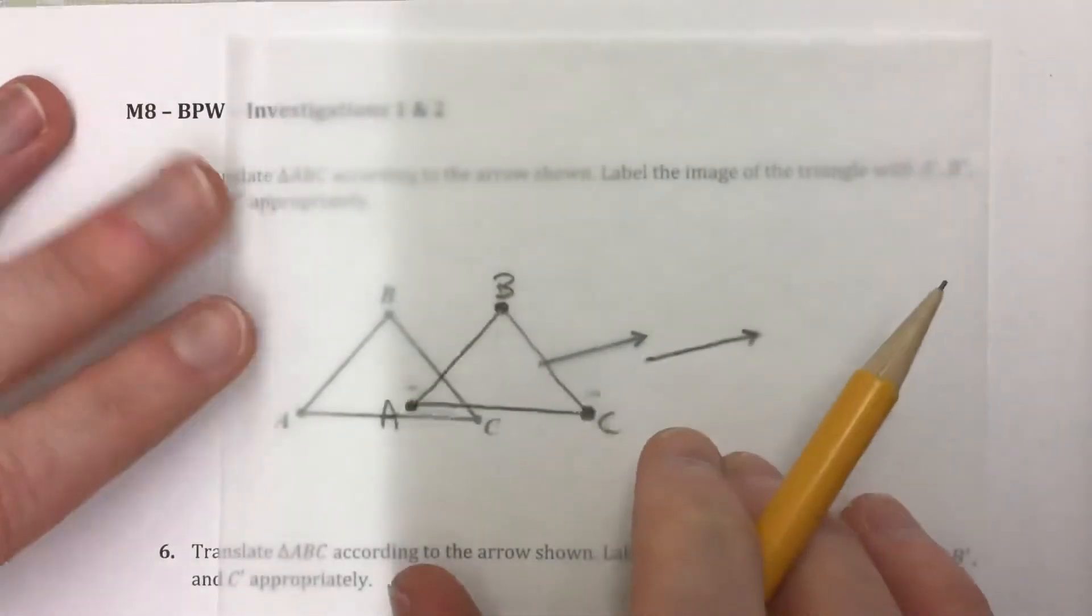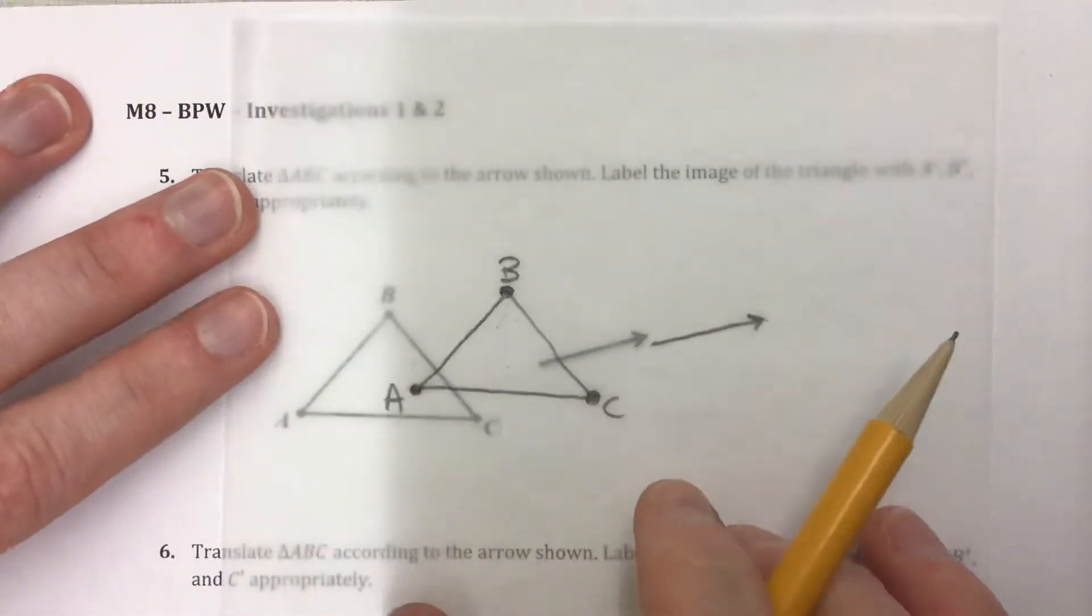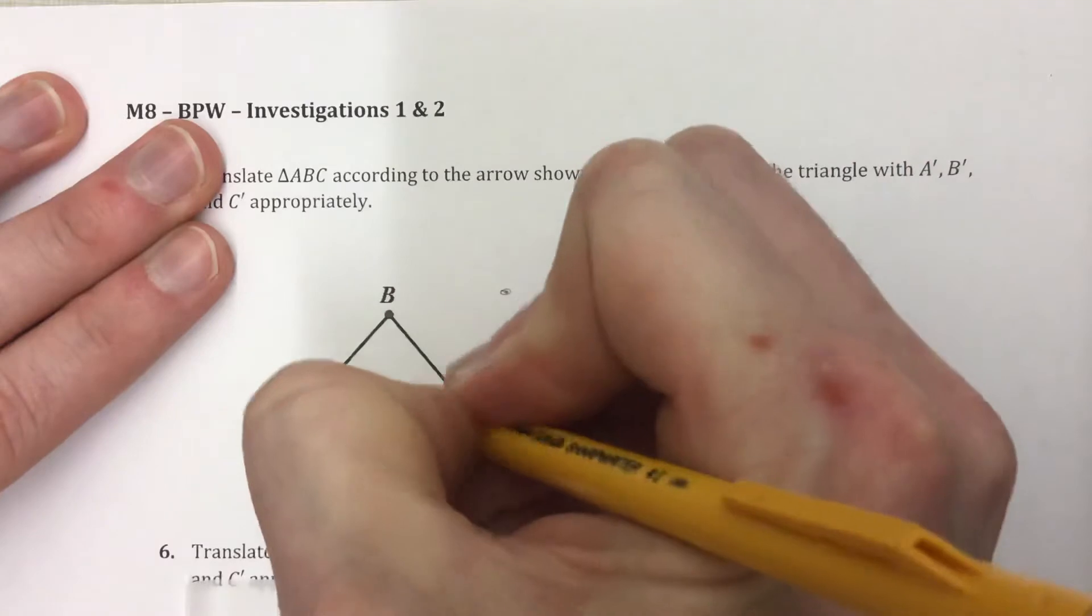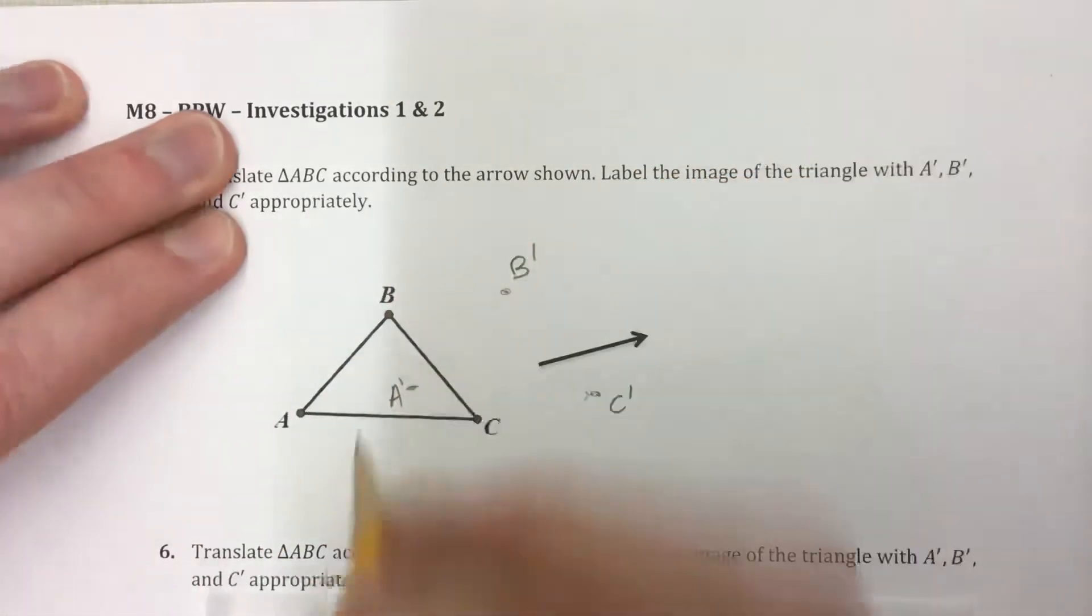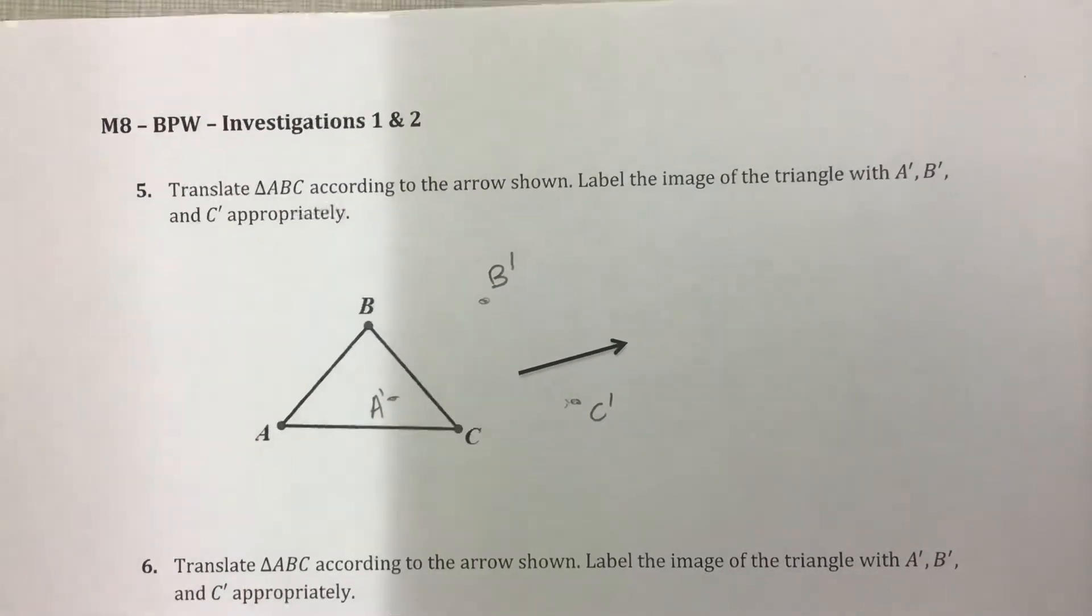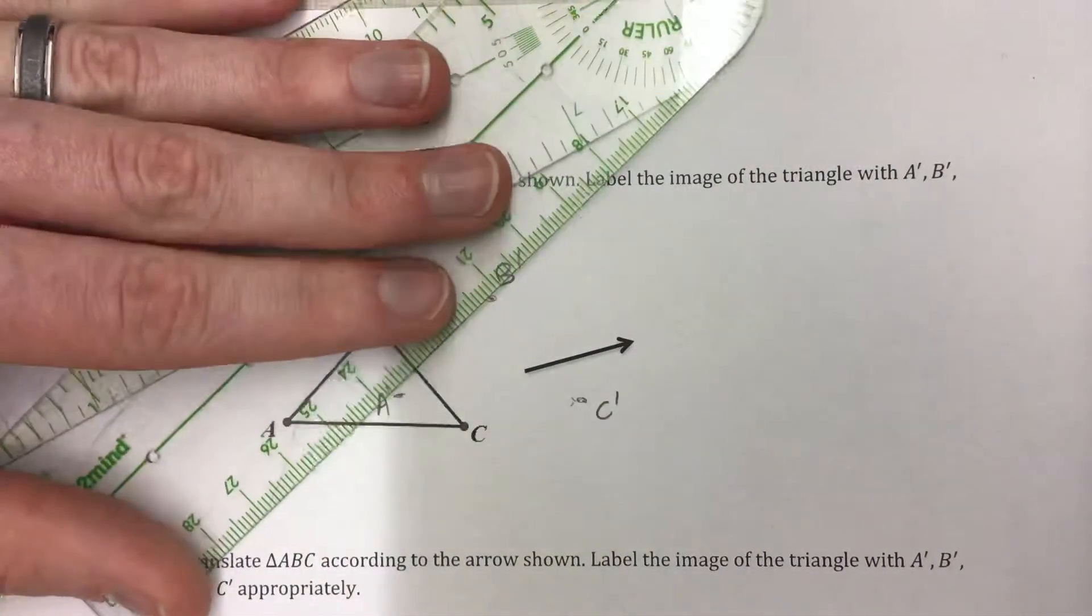Now it's good to trace it with the letter so we know which letter is which here. So this is the new A, that's A prime, this is new C, and this is new B. So C prime and B prime. Then from there we can connect these and make our triangle.